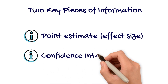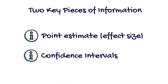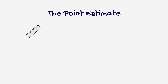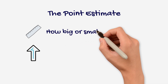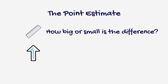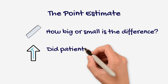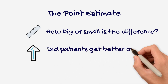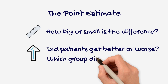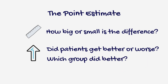In this video, we will focus on the point estimate. There are two components of a point estimate: size and direction. The size of the effect refers to how big or small the difference in outcome is between two groups. The direction of the effect tells us whether patients improved or worsened, or which group did better.